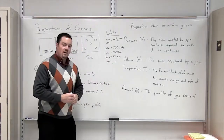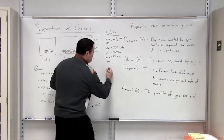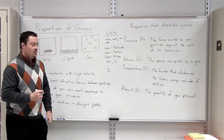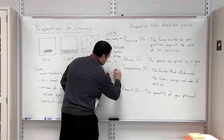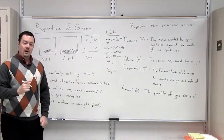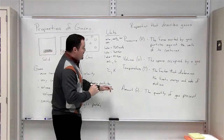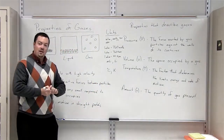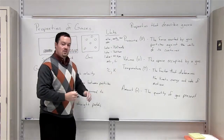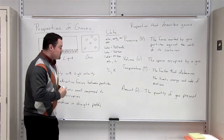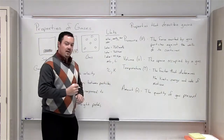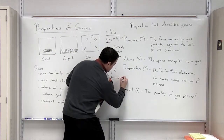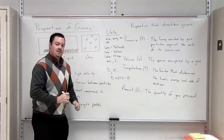Now what are some units that we measure temperature of gases in? You will see them measured in degrees Celsius or Kelvin. However, you must remember that any time you are using the temperature of a gas in any type of calculation, it must be converted to Kelvin first. In order to convert a Celsius temperature value to Kelvin, you must add 273, and that will give you the temperature value in Kelvin.